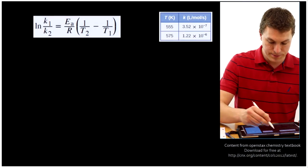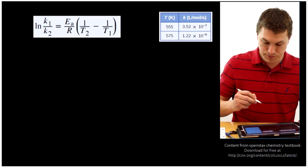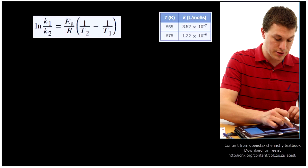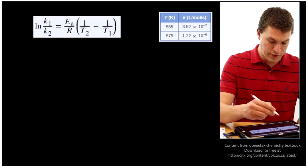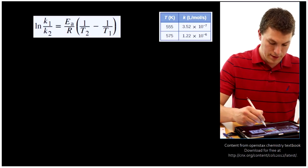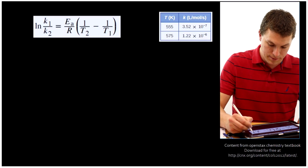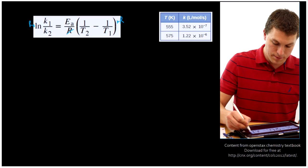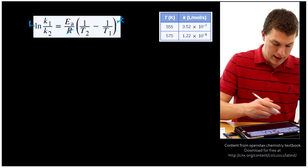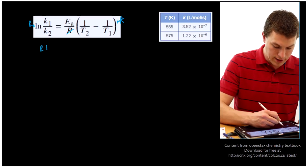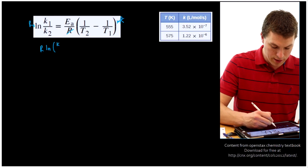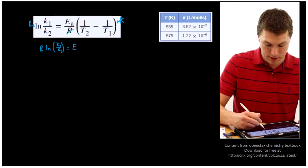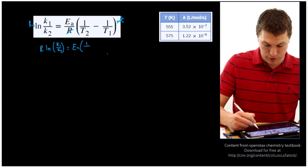So here we have our equation and we have our sets of values. The first thing we're going to do, like I said, is just rearrange for our activation energy. The way we rearrange for our activation energy is first by multiplying both sides by R. That's going to get rid of our R there. And what we're going to get is R ln k1 over k2 is equal to our activation energy times this difference between our temperatures.